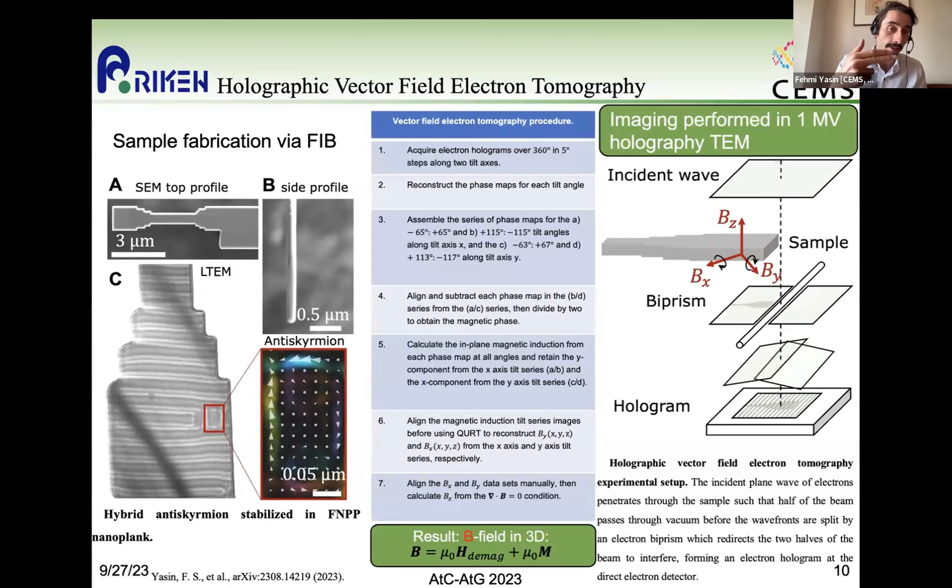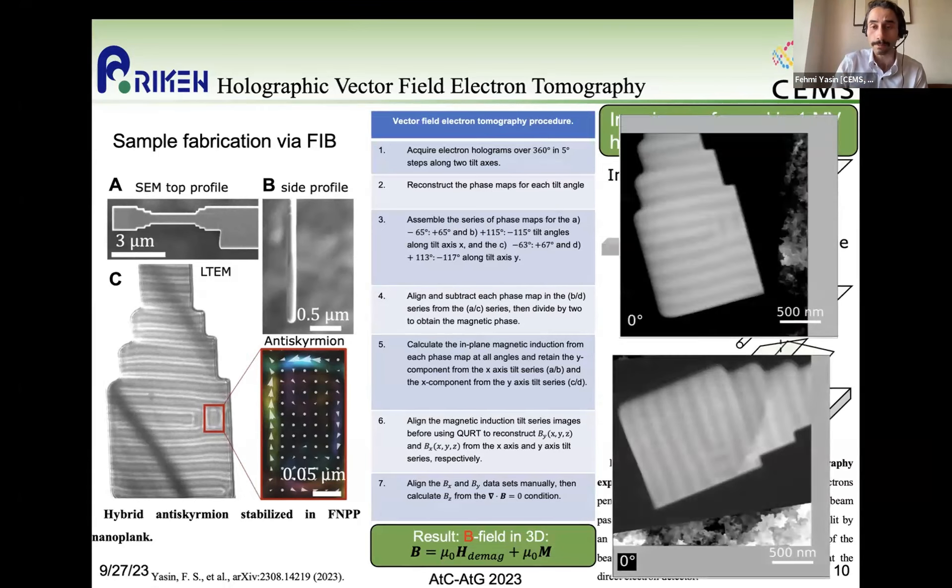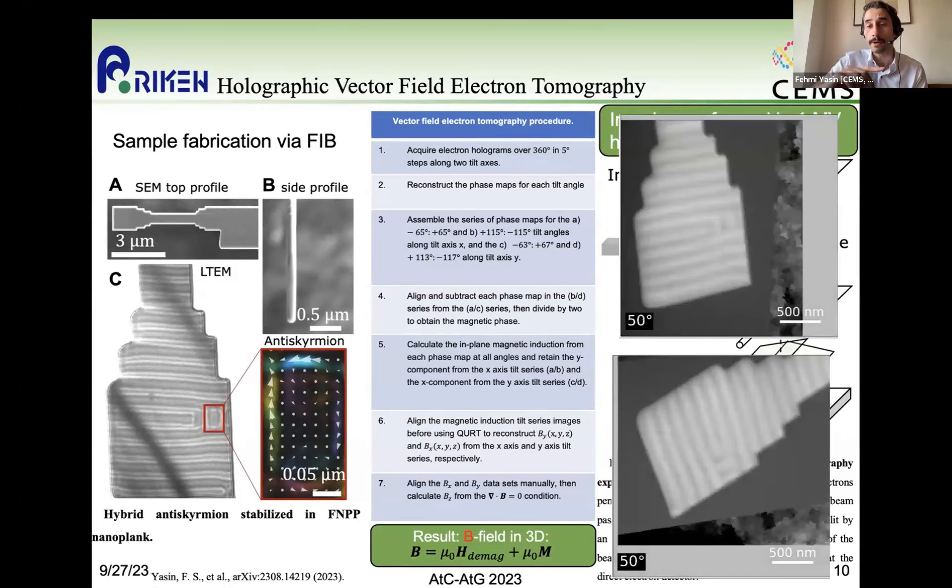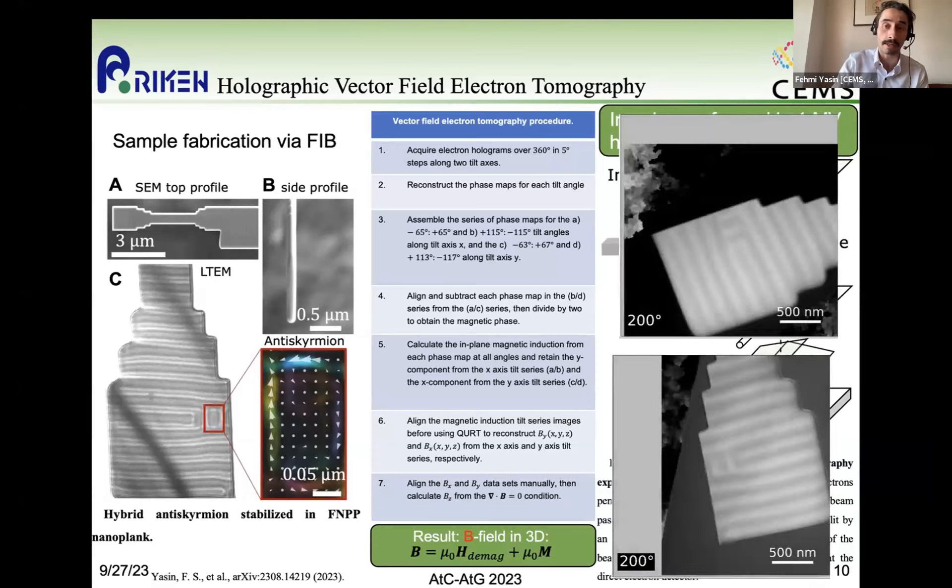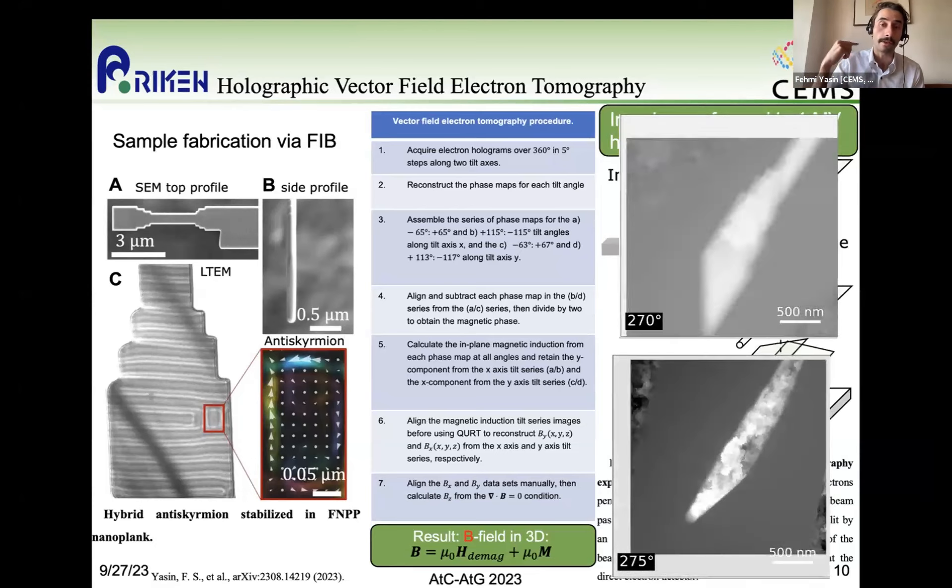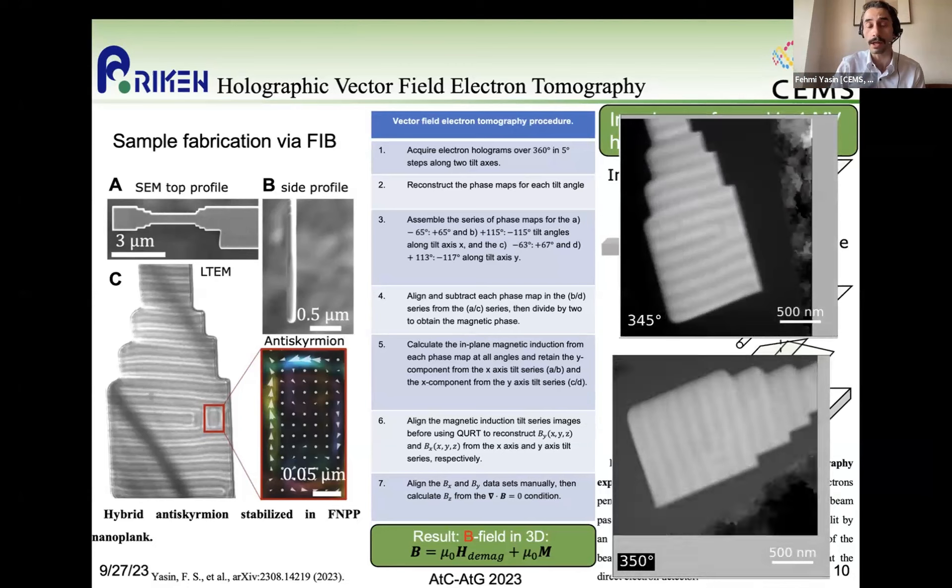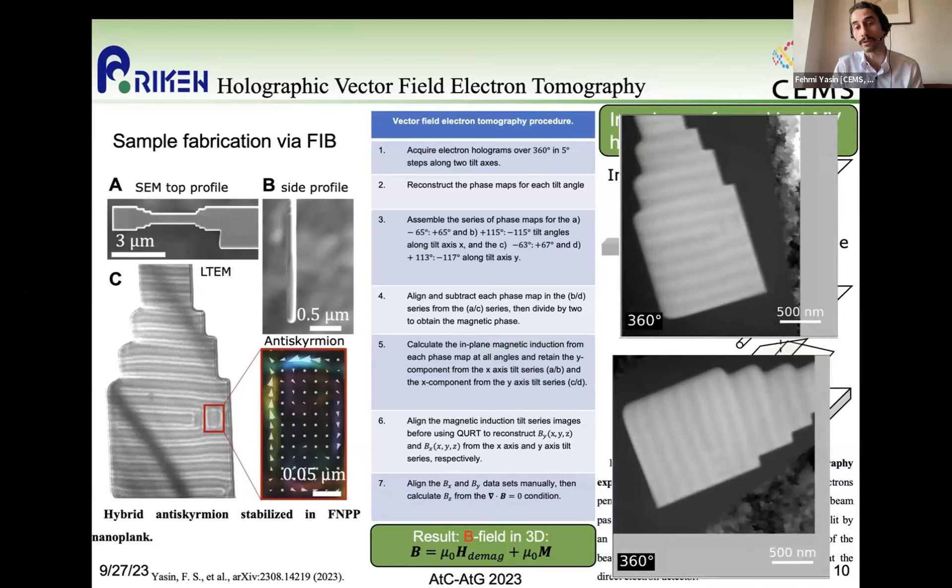And so then we take this nanoplank and we put it on our 3D needle, which is mounted in this 3D holder in a one megavolt holography transmission electron microscope. And then we actually acquire electron holograms as we tilt this sample over 360 degrees. We have to tilt over two orthogonal axes in order to reconstruct from these projected images the three-dimensional X and Y components of the magnetic vector field. And then from the X and Y components, we can then calculate the Z component using the divergence-less B field condition.